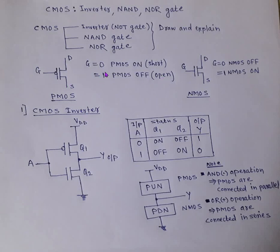Now, with this information, we will look at the CMOS inverter — that is, the CMOS circuit for the NOT gate. An inverter is nothing but a NOT gate. For that, we use one PMOS and one NMOS, and both the PMOS gate and NMOS gate are connected together to apply one input. VDD is the supply. Q1 is the PMOS and Q2 is the NMOS. We will study the truth table showing the status of Q1 and Q2.